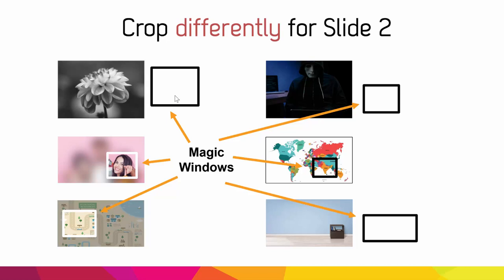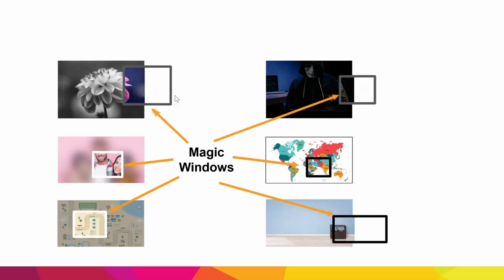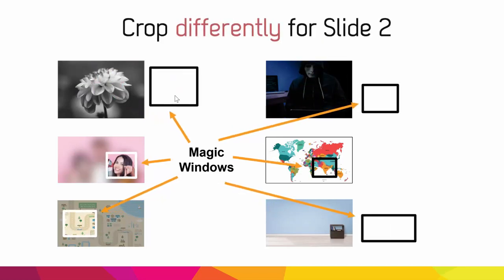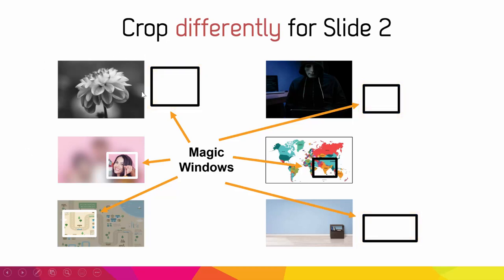Let's see that again. Here's slide one crop, and here's your slide two crop. As you can see for these three images, I actually moved the crop outside of the image, which is definitely an option for you. You can have your crop window anywhere you want in the image or even outside of it, including outside of the slide if the image is a full slide image.